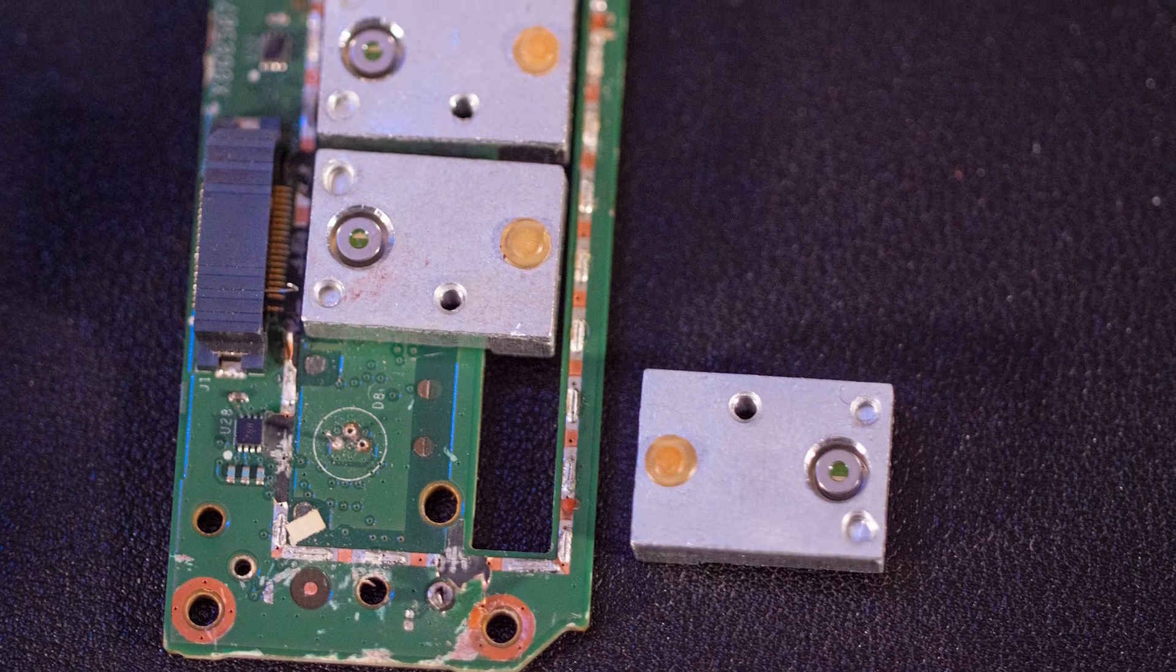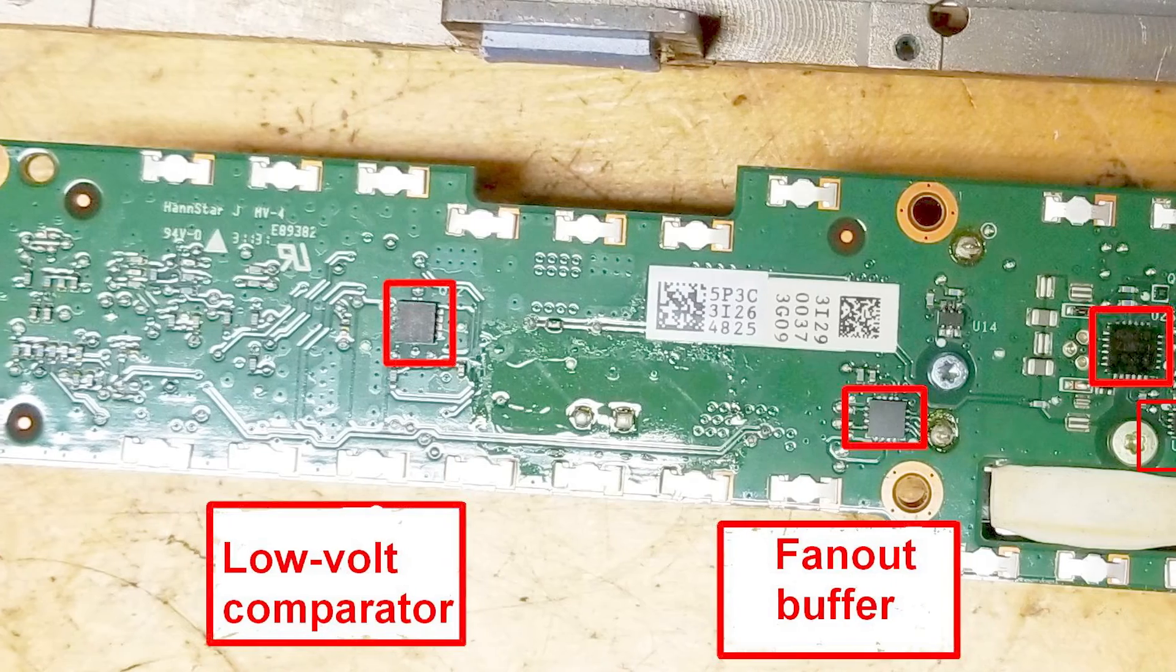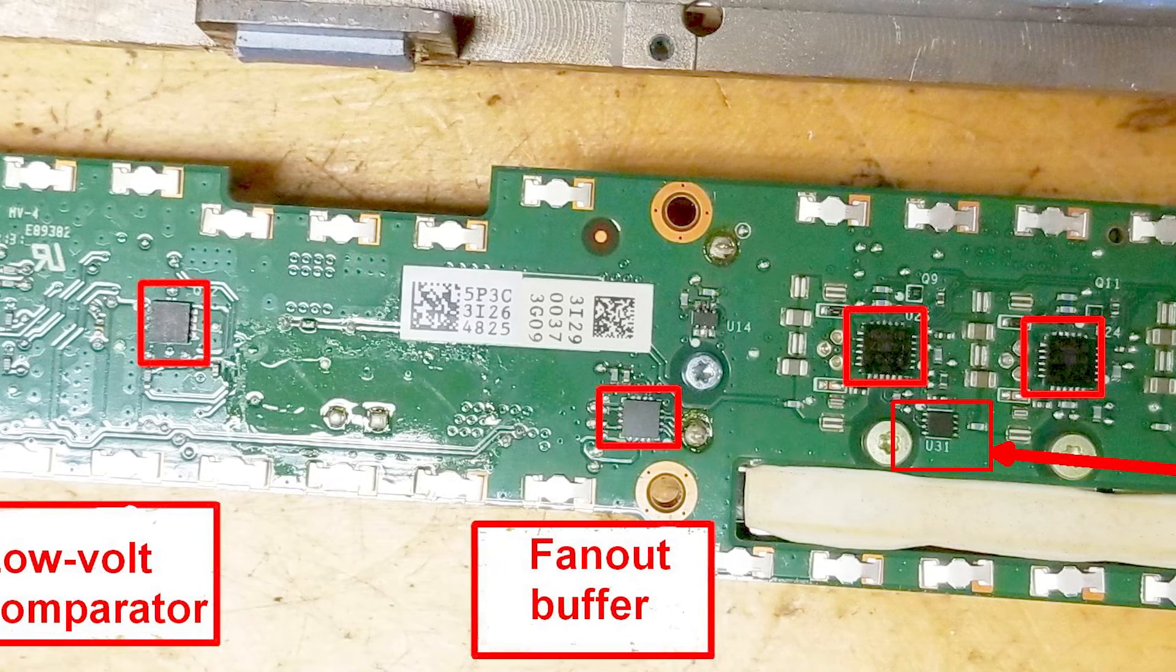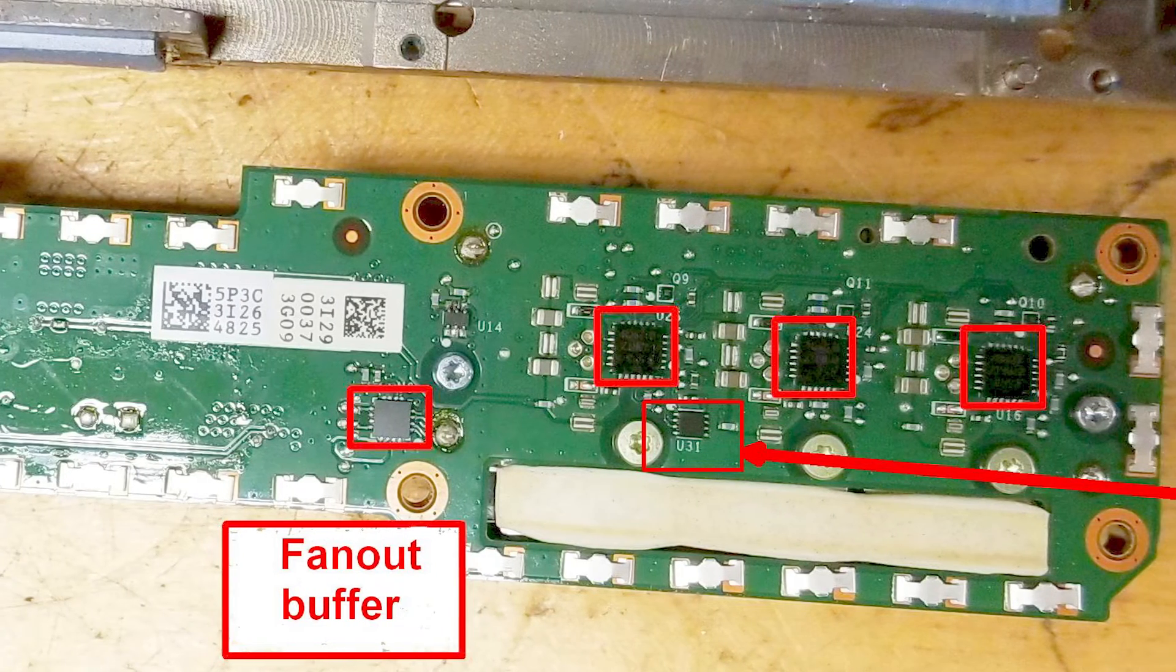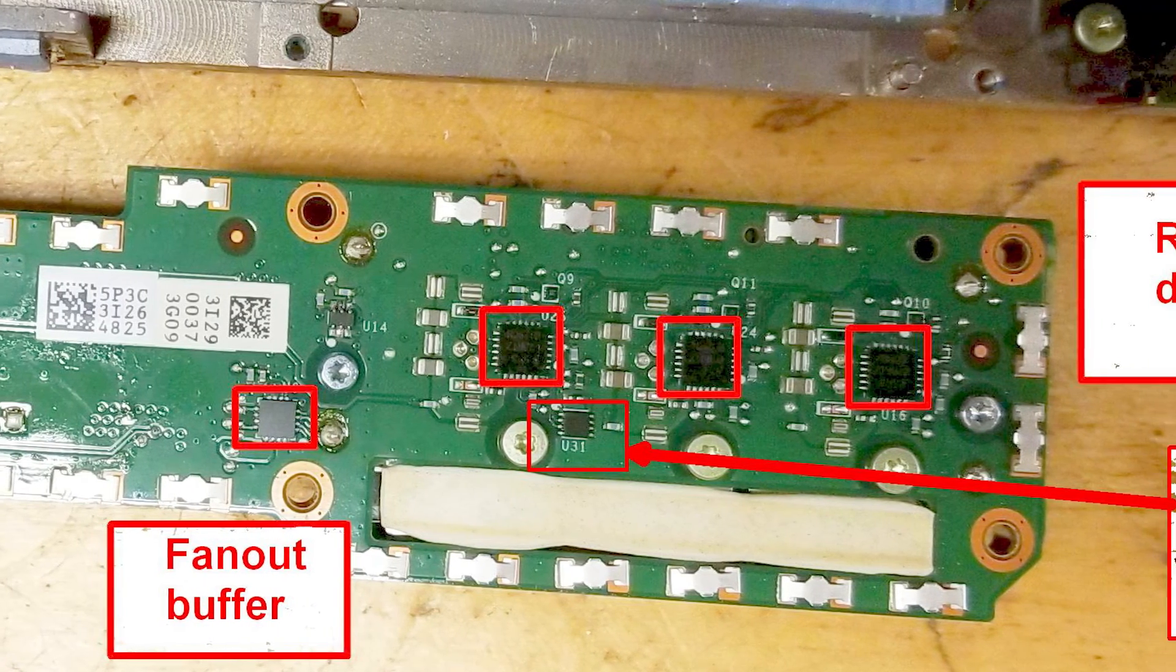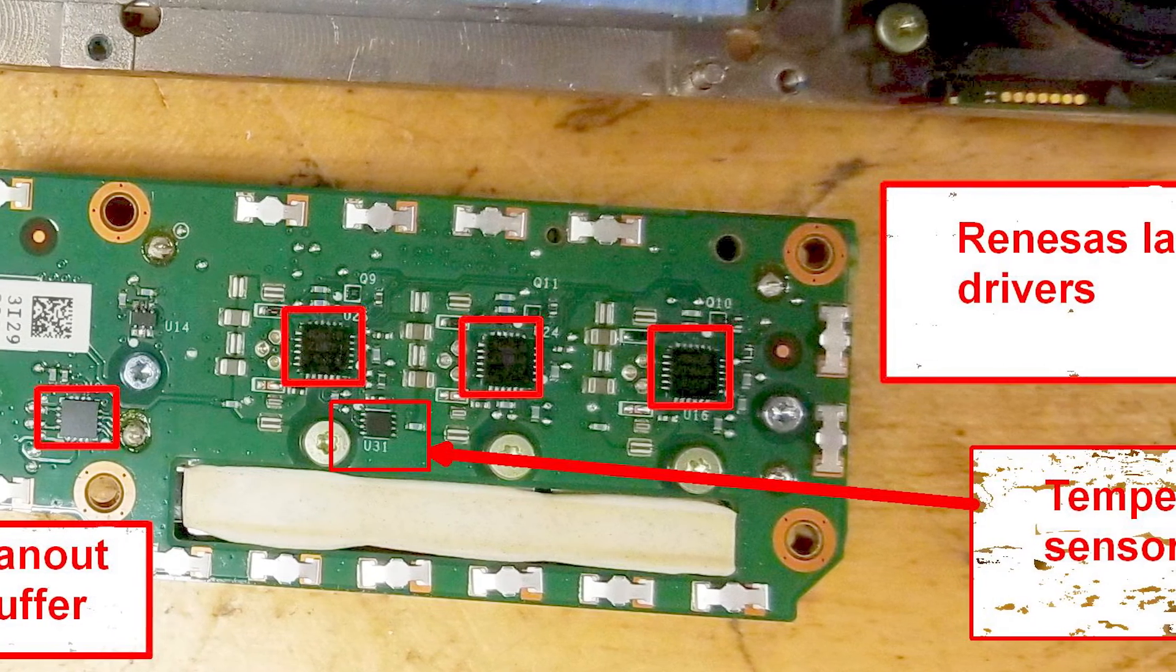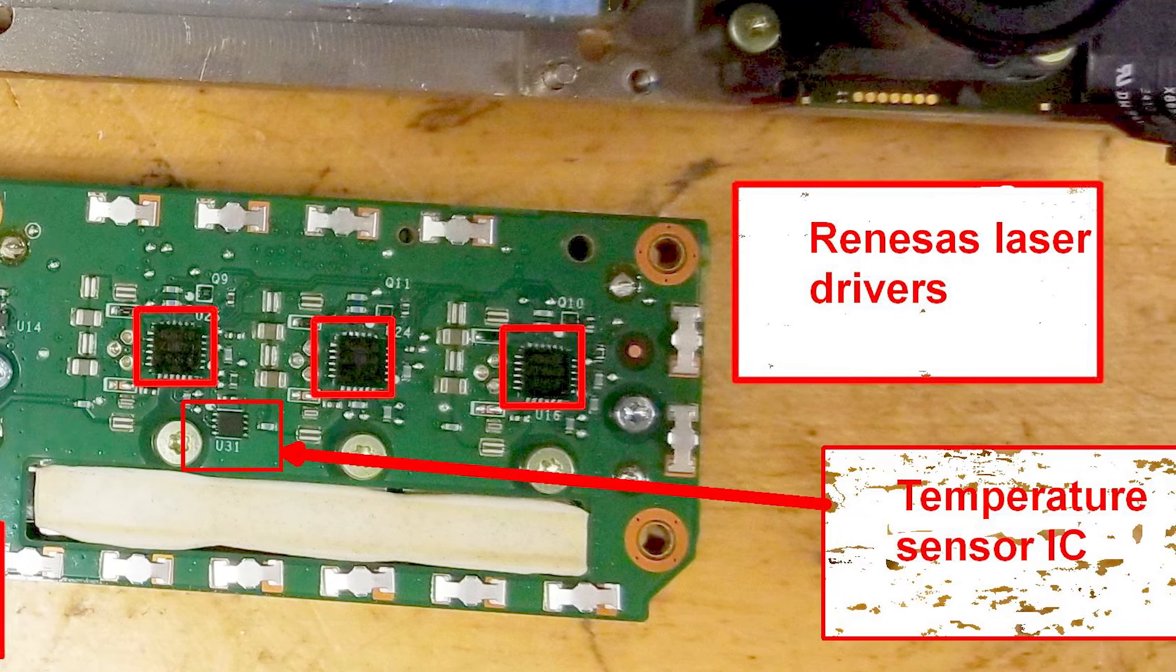The three infrared laser diodes sit on a PCB along with circuitry covered by two metal shields used to minimize EMI. Beneath the shields lie an on semiconductor fan-out buffer and a laser diode driver that seems to be from the inter-seal subsidiary of Renesis. Also, there is a low voltage comparator from Texas Instruments and a digital temperature sensor with EEPROM from Microchip.